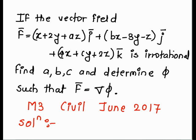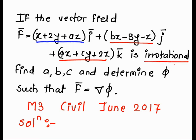Before going to the example, we understand the keywords. The first term is nothing but our f1, the second term is our f2, and the third term is our f3. The given condition is that the field is irrotational, meaning curl of F bar equals 0.